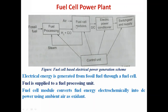There is a control unit which controls the amount of fuel supplied to the fuel cell module and overall controls the activity of all four blocks: fuel processing unit, fuel cell module, electrical power conditioner, and switchgear and supply. Electrical energy is generated from fossil fuel through hydrogen: fossil fuel is converted into hydrogen, hydrogen is supplied to the fuel cell, and electricity is generated. The fuel cell module converts fuel energy electrochemically into DC power using ambient air as oxidant, and then the inverter converts DC to AC.